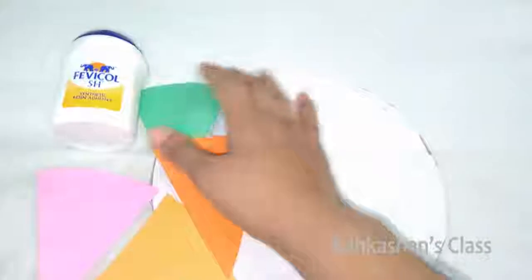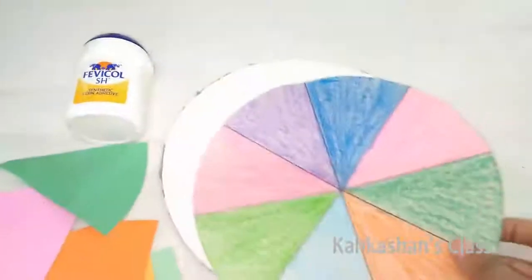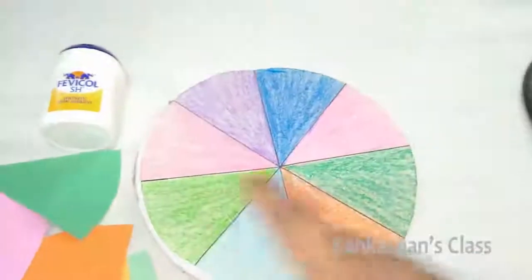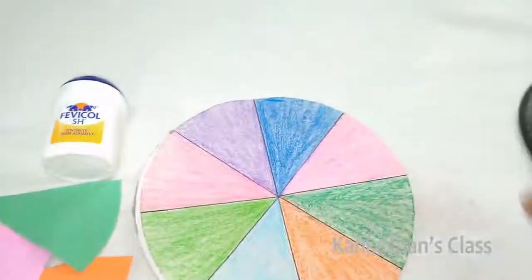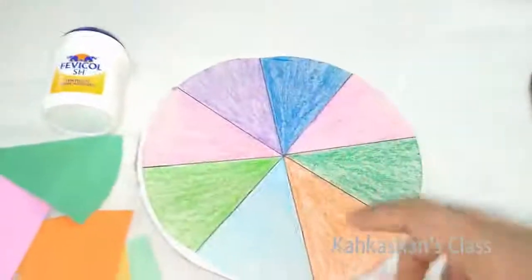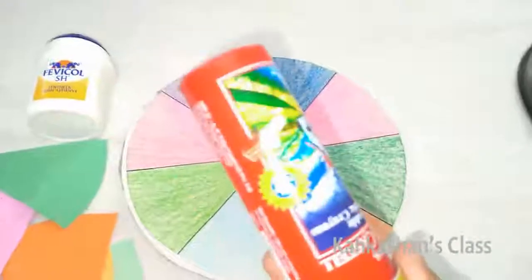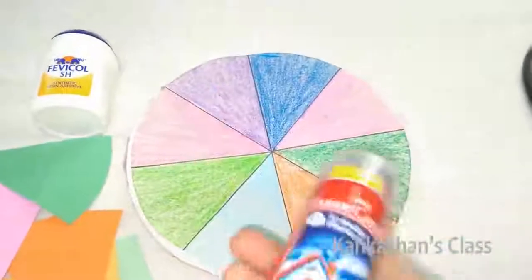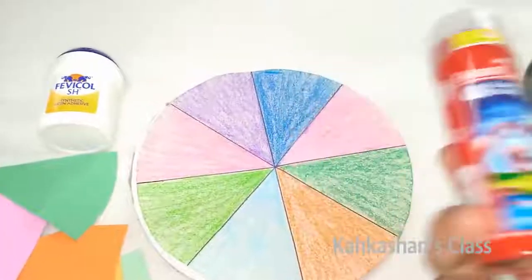If you don't have colored sheets, doesn't matter. You can take the other circular sheet and color them like this with the crayons. You should have eight sections.